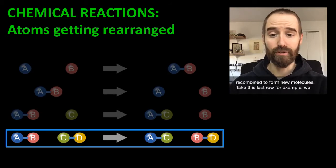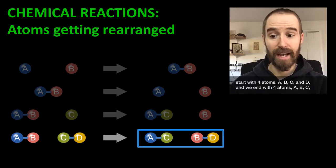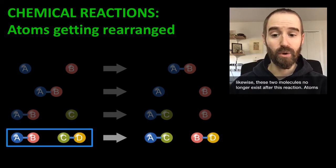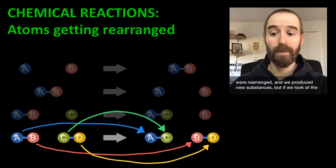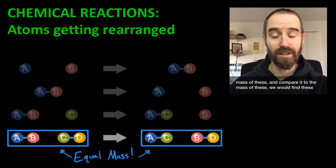Take this last row, for example. We start with four atoms — A, B, C, and D — and we end with four atoms — A, B, C, and D. However, these two molecules didn't exist before this reaction, and likewise, these two molecules no longer exist after this reaction. Atoms were rearranged and we produced new substances, but if we compare the mass of these to the mass of these, we would find these masses to be equal.